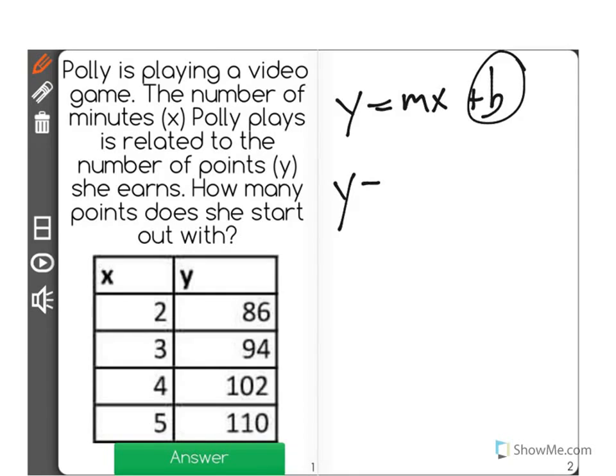We don't know what m is yet. Let's start here: y equals m times 2 plus b. We know that 86 is y, and m is the rate of change.